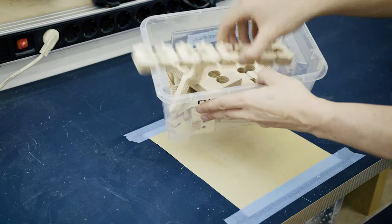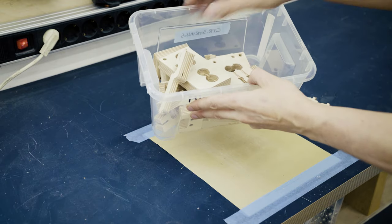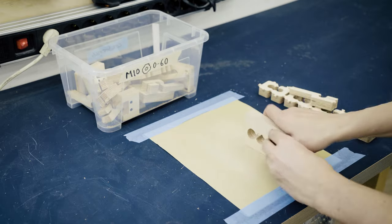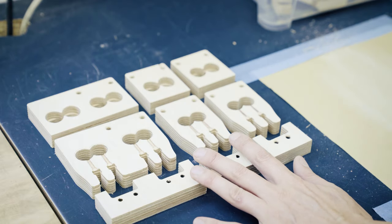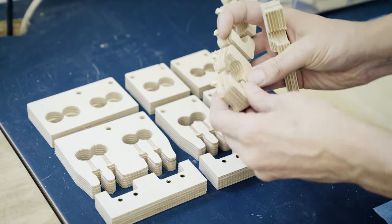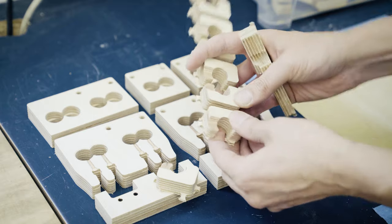Just like with laser cut parts, the CNC machine parts needs quite a lot of post processing. Some of them I can sand right away. All this part with holes I could hold down with screws so I didn't need any tabs. All the other parts I have to remove these tabs.